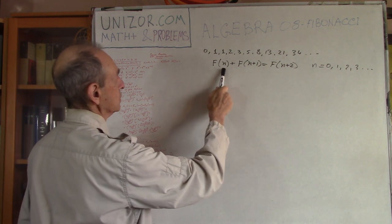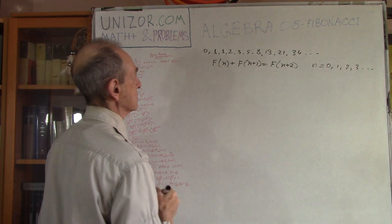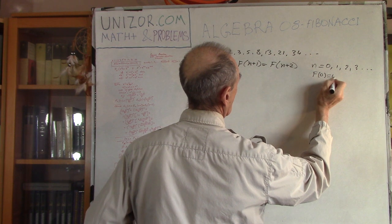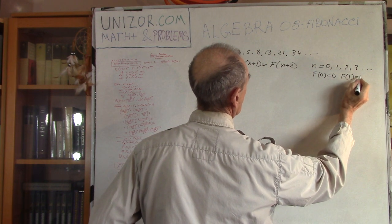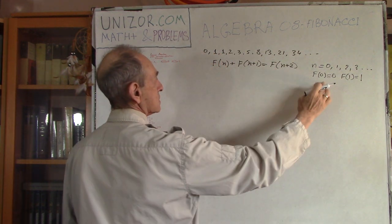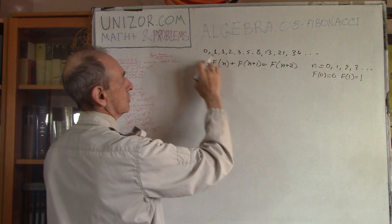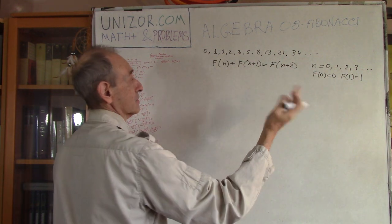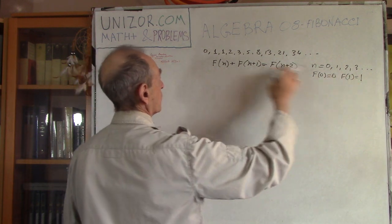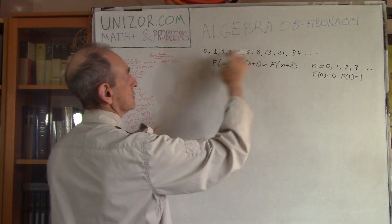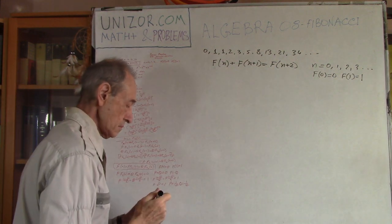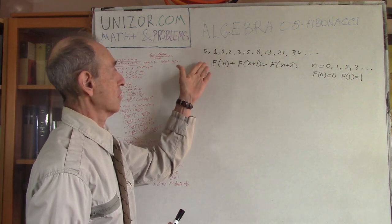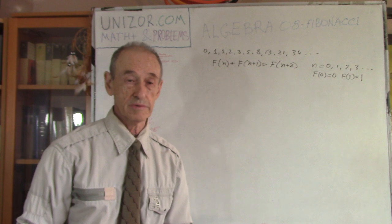If you put zero here, F(0) = 0 and F(1) = 1. We start with zero — it's more convenient. And everything else follows from this principle. The principle is extremely simple: two numbers, and then every next number is the sum of the two previous ones.